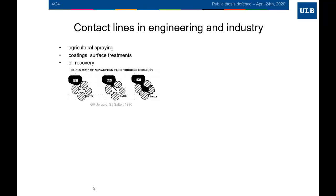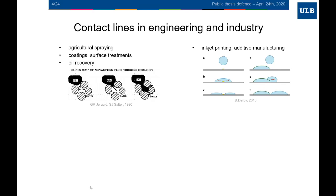The contact line plays a central role in many engineering and industrial applications. For example, it determines the effectiveness of spraying insecticides and pesticides on agricultural crops, where we want to minimize chemical runoffs. It is also important when applying coatings or other surface treatments. Capillarity is an important part of soil science; in oil recovery you have oil displacing water through a porous medium, and at the small scale you have many contact lines between the oil, water, and porous rock. In inkjet printing, used for printed electronics and displays, the resolution of printed structures at the final stage depends on what the contact line will do.